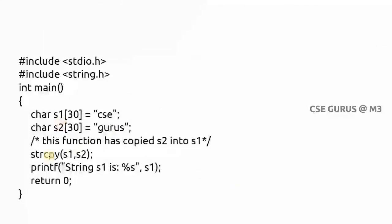The first one is the string copy function, strcpy, which copies whatever is in s2 to s1. S2 is the source and s1 is the destination. So if s1 contains 'csc' and s2 contains 'gurus', after execution 'gurus' will be copied to s1 — it's not adding, it's replacing. S2 also still contains 'gurus' because it is just copying from s2 to s1.